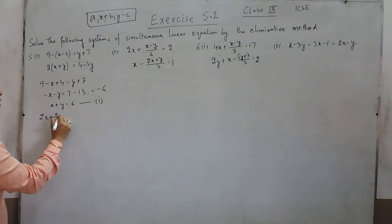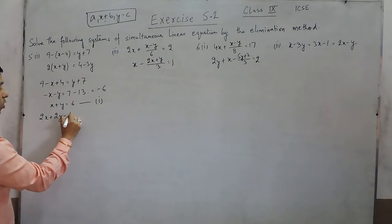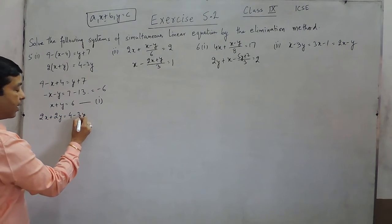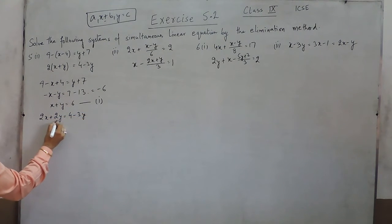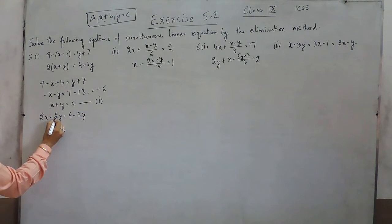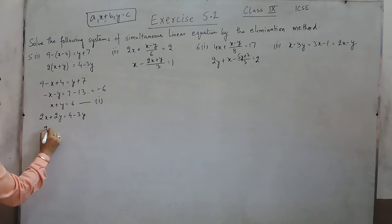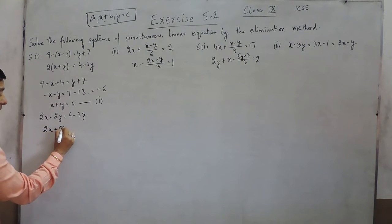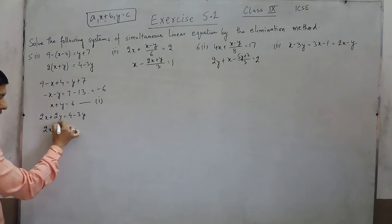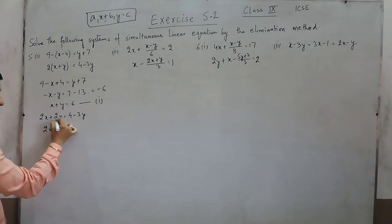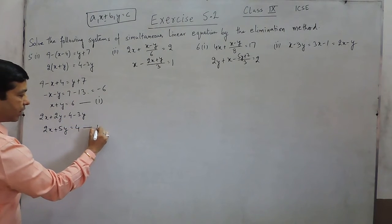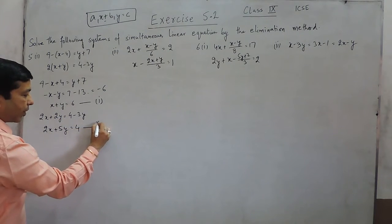If 2x plus 2y is equals to 4 minus 3y, I take this 3y on the left hand side, it is 2x plus 5y — that is 2y plus 3y, which is 5y — is equals to 4. So this is the second equation.